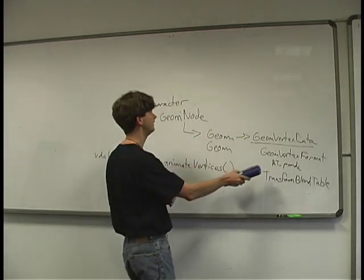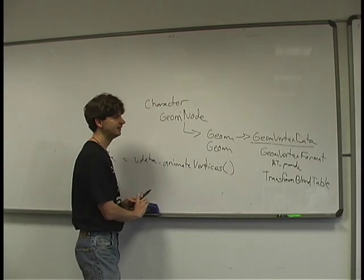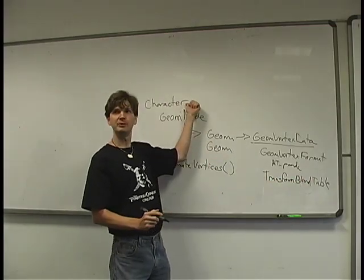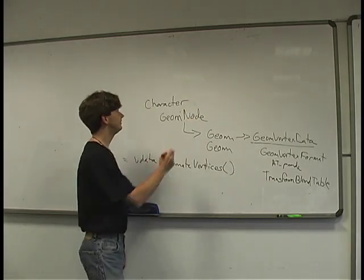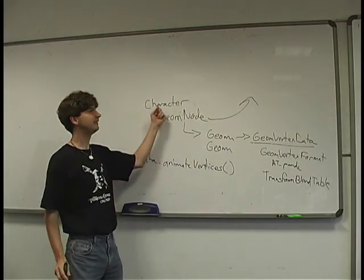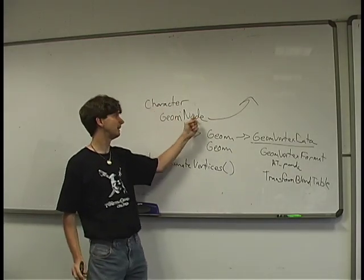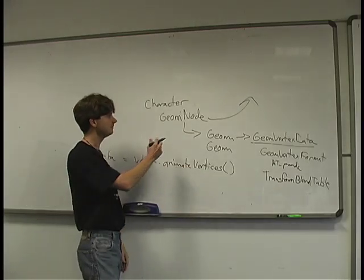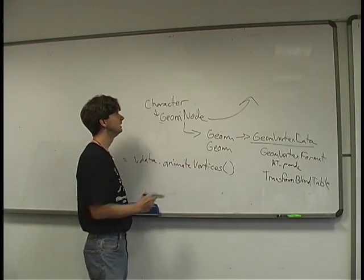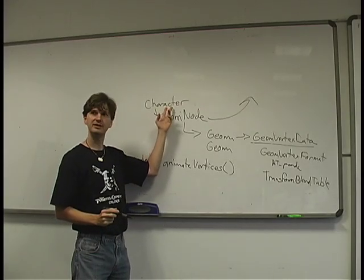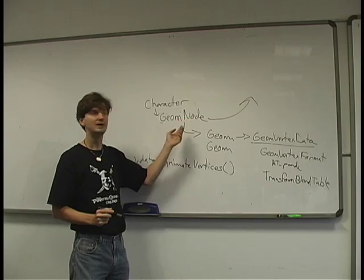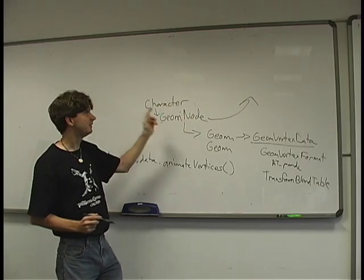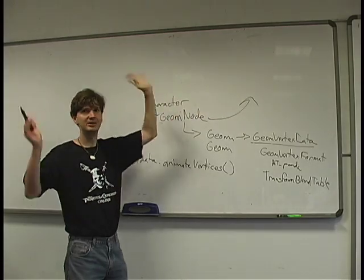That's how we tie together the GeomVertexData to the PartBundle. Inside the GeomVertexData there's a TransformBlendTable that has pointers into the PartBundle stored inside the Character. This means if you take your GeomNode and reparent it somewhere else, it's still going to be slave to the original Character via back-pointers in the vertex data. However, it's usually a good idea to keep it parented under the Character, because the Character needs to compute its TransformBlendTable before you render the GeomNode — that's why the Character is on top.